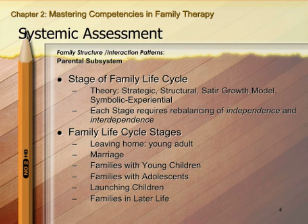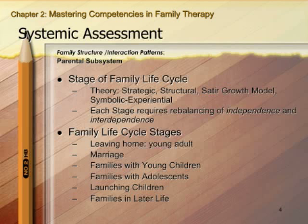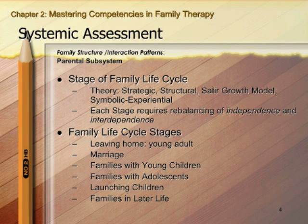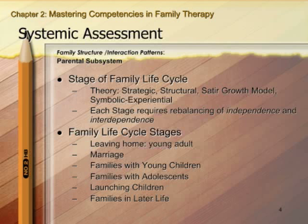The life cycle stages we use here are: leaving home as a young adult, then getting married — a period of rebalancing independence versus interdependence — families with young children, families with adolescents, launching children (which often has a boomerang effect where kids go to college, come home, go back, come home again), and families in later life where parents are older and often needing care from their children.